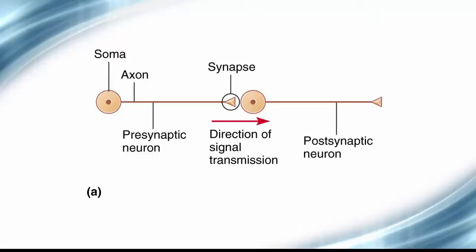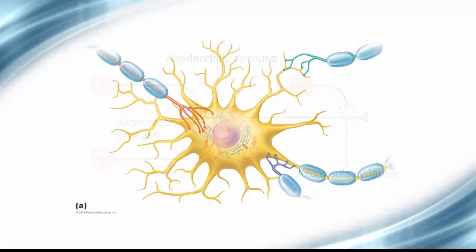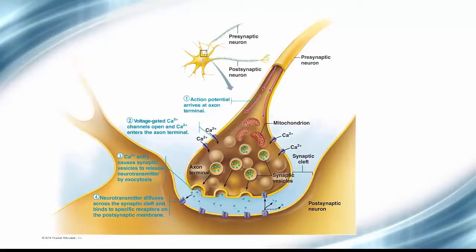Axons typically end in knob-like axon terminals, and these terminals are part of a presynaptic neuron, whereas the cell on the other end of the synapse is called a postsynaptic cell. We have also seen synapses at the neuromuscular junction. We will be focusing our attention on the chemical synapse, which is accomplished through the release of neurotransmitters. Chemical synapses convert electrical signals to chemical signals, and then back to electrical signals on the postsynaptic membrane.